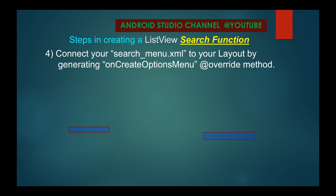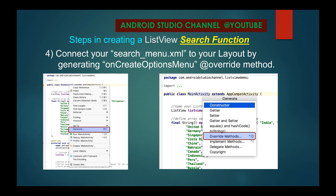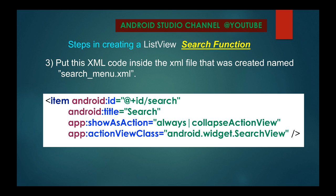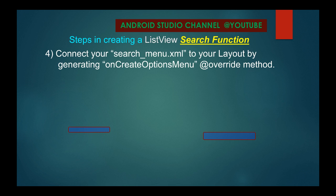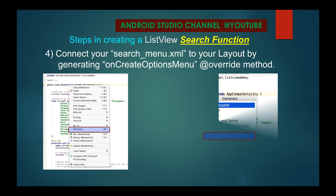Step four is to connect your searchmenu.xml to your layout by generating the onCreateOptionsMenu override method. If you run the application now, you would not yet be able to see the searchmenu.xml in your action bar at the top, because you have not yet created the override method onCreateOptionsMenu and put the applicable code there.